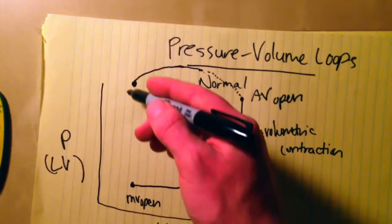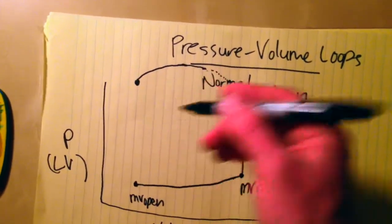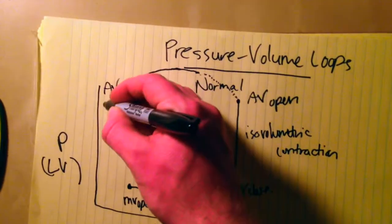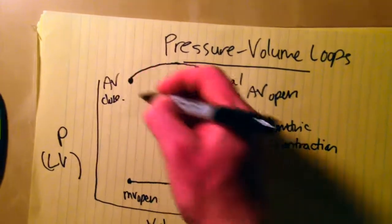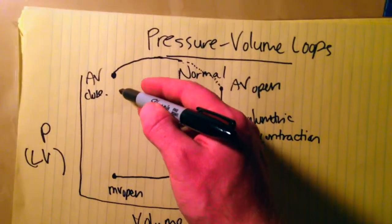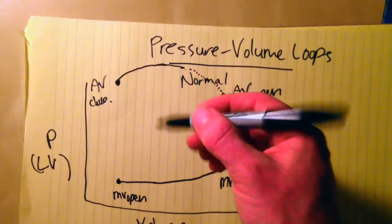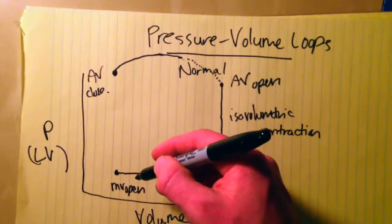The pressure in the left ventricle is going to be lower than it is in the aorta, and at that point the aortic valve is going to close. But at this point, the pressure in our left ventricle is still significantly higher than it is in the left atrium. As a result, the mitral valve is still going to be closed.